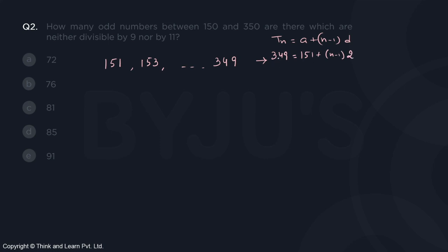From there I get 349 minus 151. So 349 minus 149 is 200. Further 2 is subtracted, it is 198 divided by 2 is n minus 1. So n equals 99 plus 1, that is equal to 100.